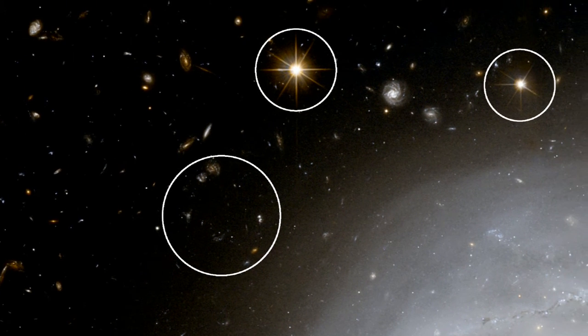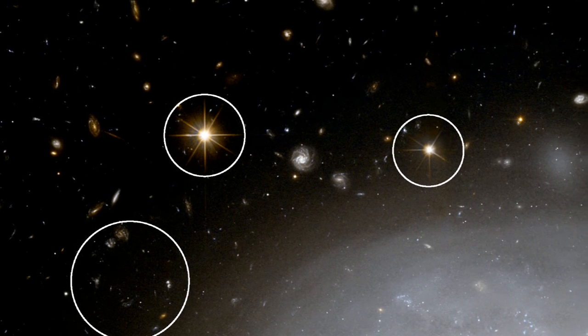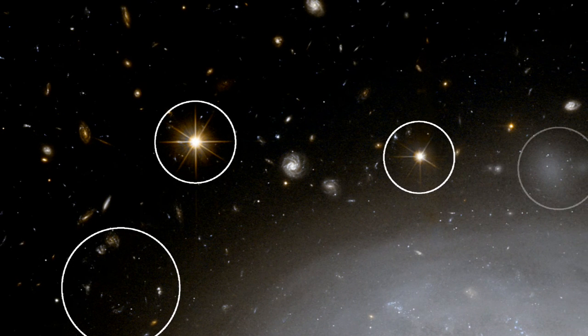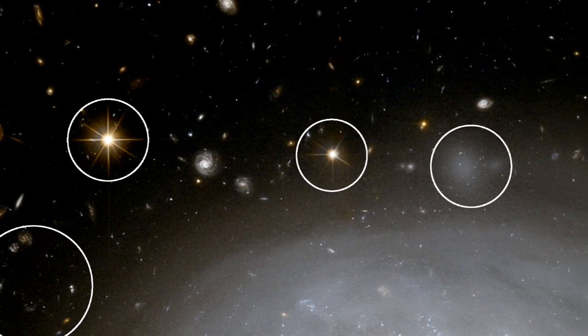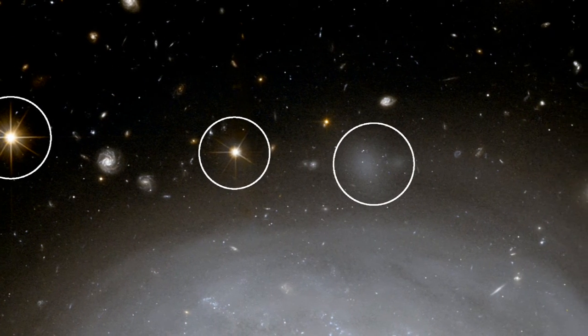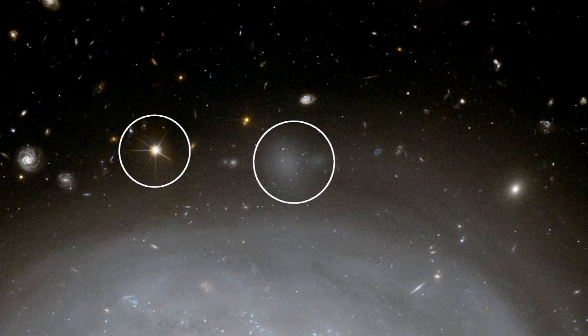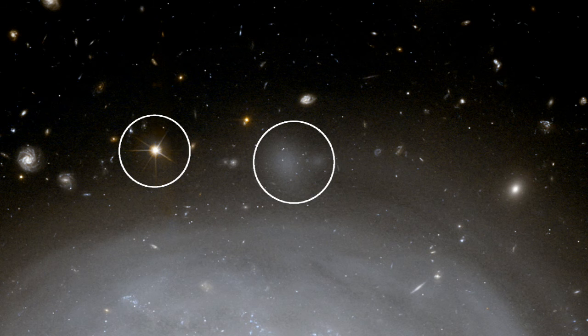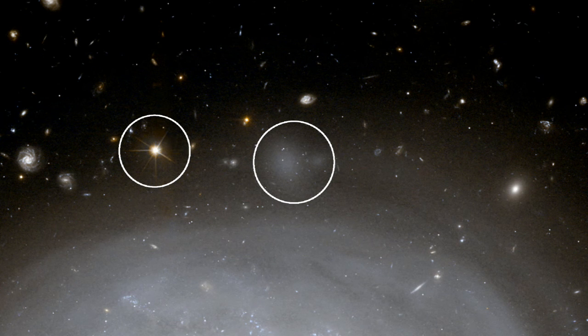Also seen are foreground stars in our own Milky Way. Many galaxies have companions and NGC 4921 seems to be no exception. We could see several faint patches that are most likely to be smaller satellite systems orbiting their huge parent.